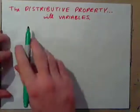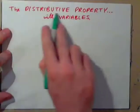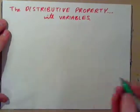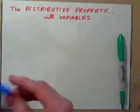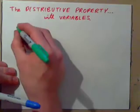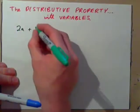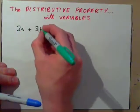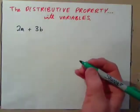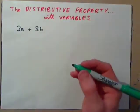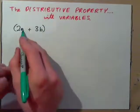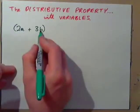Let's take a look at the distributive property with variables. For example, we could have 2a plus 3b. A variable represents a number usually, or it could also represent a quantity. For example, a could represent an apple, b could represent a banana.